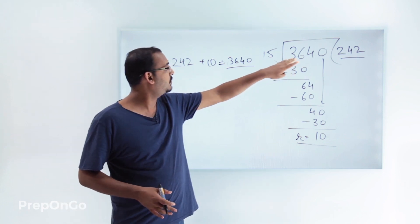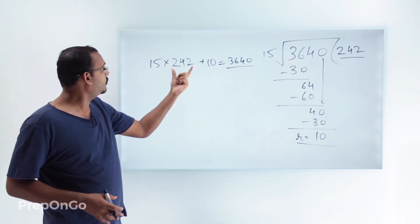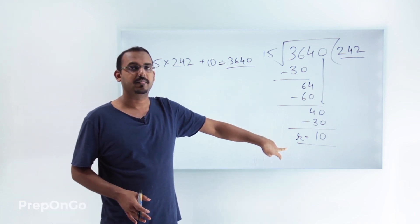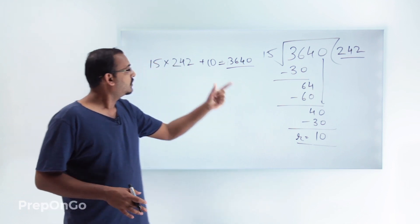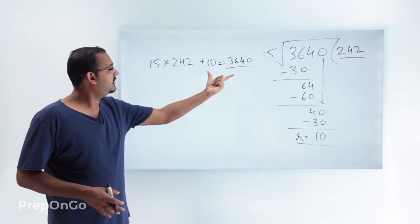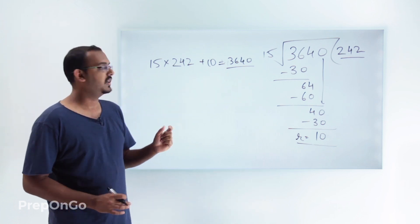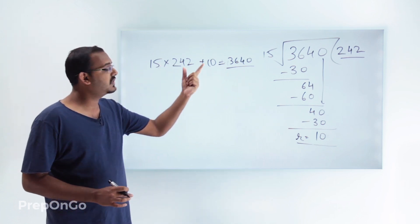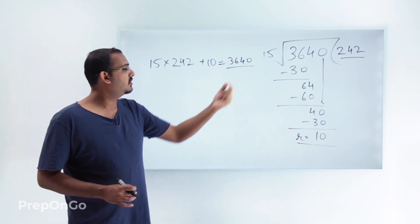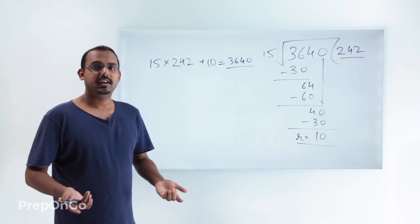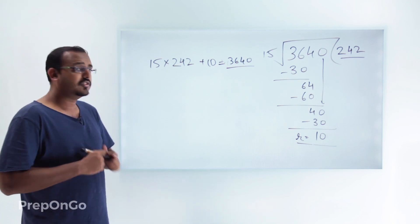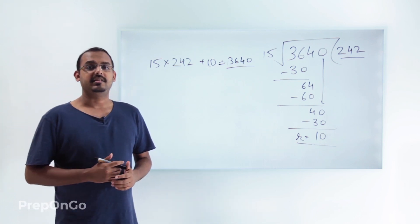We divided 3640 by 15 and it went 242 times leaving the remainder as 10. So I can represent this division process as: divisor times quotient plus remainder gives the value of the dividend or original number. This is what Euclid's division lemma tells us.